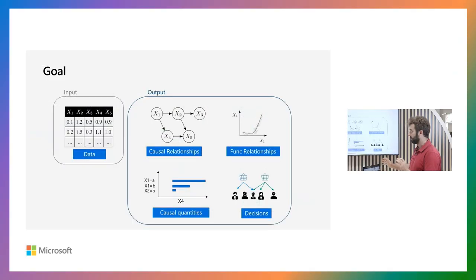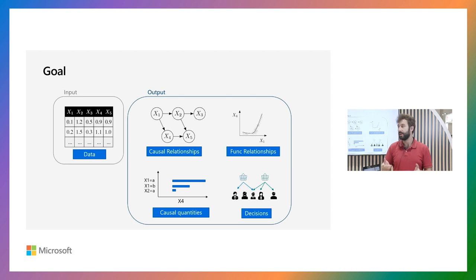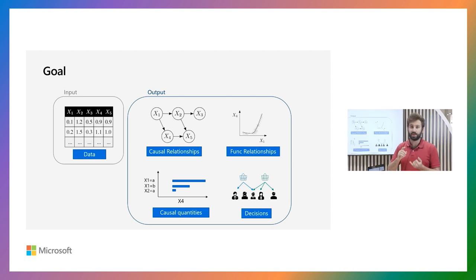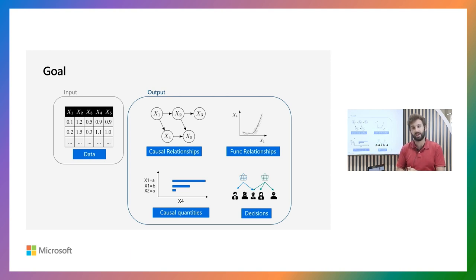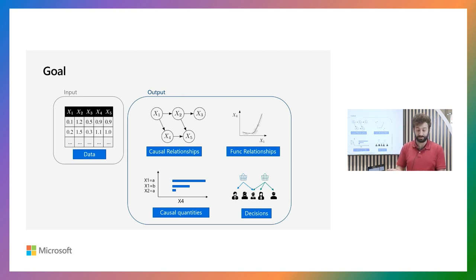Formalizing this a bit more: what we actually want to do is take some observed data and output a causal graph — the causal relationships between the different variables — and the functional relationships. Having those two things, we can then actually calculate our causal quantities: average treatment effects, conditional average treatment effects, or other things as well. And lastly, once we have them, we can make decisions.